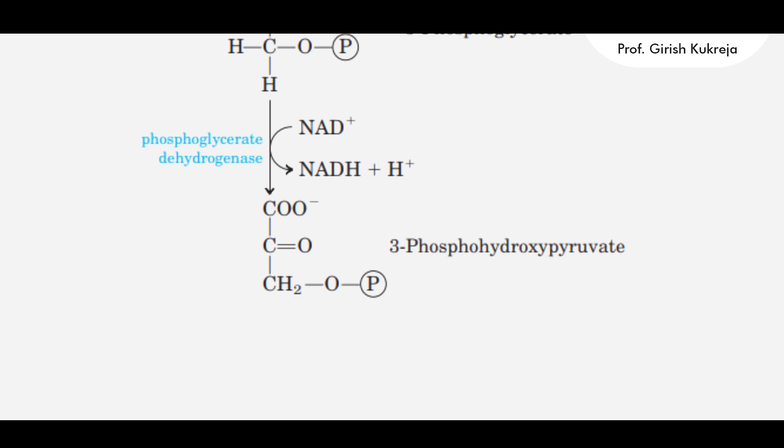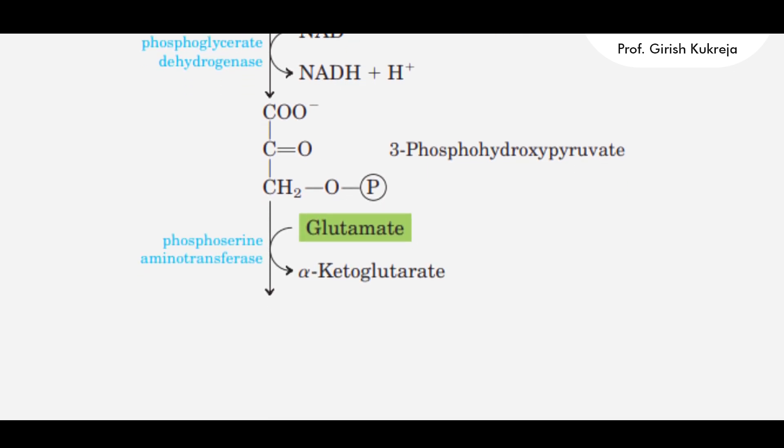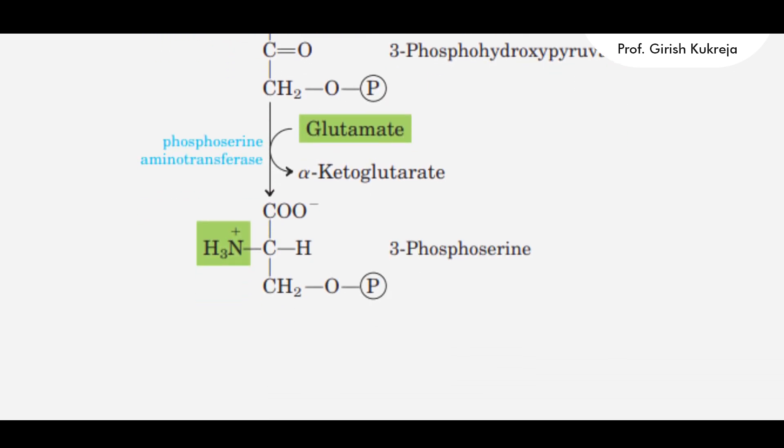This 3-phosphohydroxypyruvate undergoes transamination by phosphoserine aminotransferase. The amino group is added by glutamate, forming 3-phosphoserine. Glutamate gets converted to alpha-ketoglutarate.